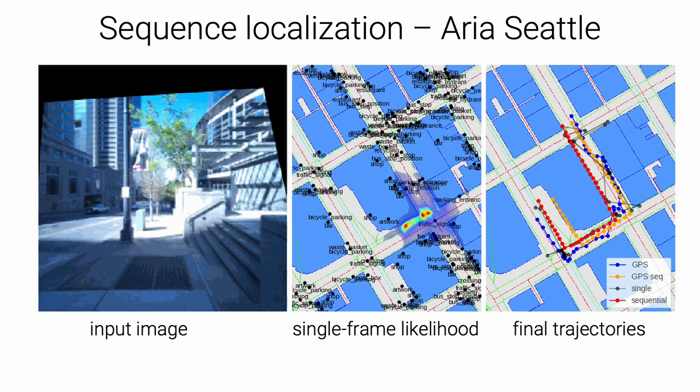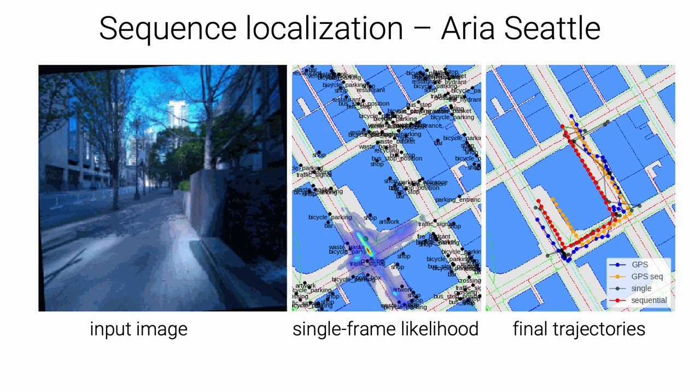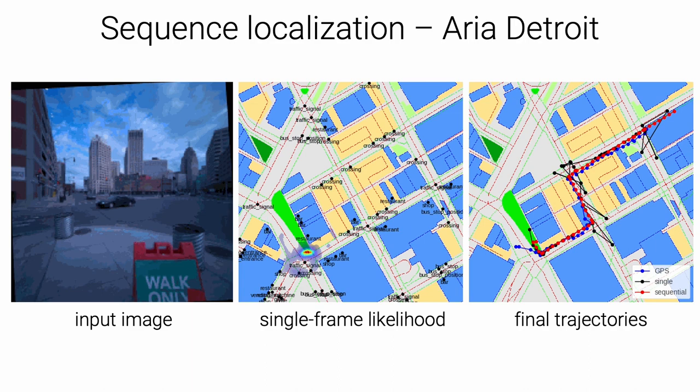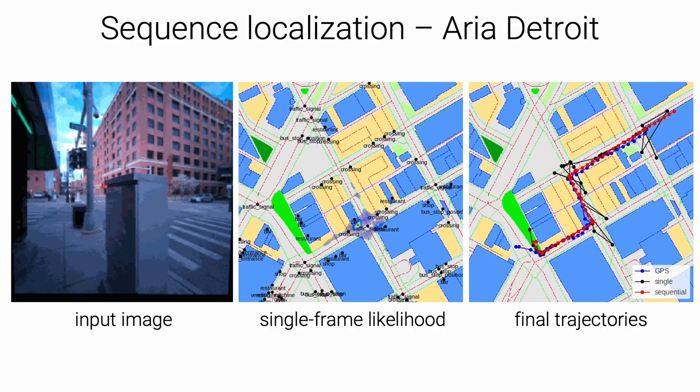Here is another example of sequence localization with Aria devices in Detroit. Here again, the GPS shown in blue jumps over time and is inconsistent, while the sequential prediction in red is closer to the ground truth.